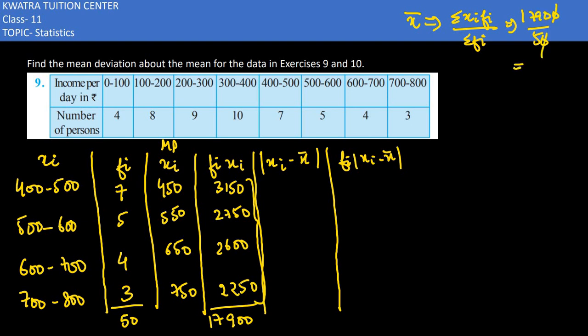So 1790 divided by 5, you get 358. Now 358 is the mean.